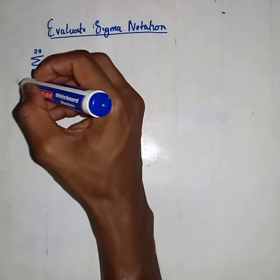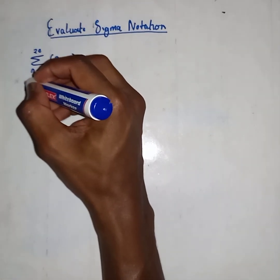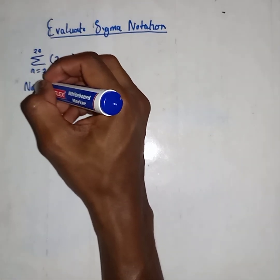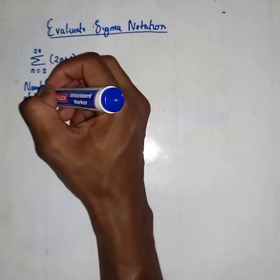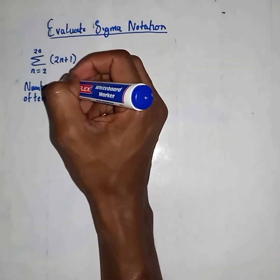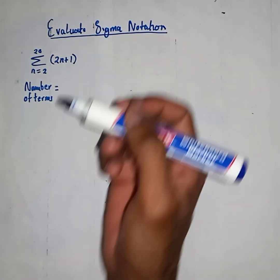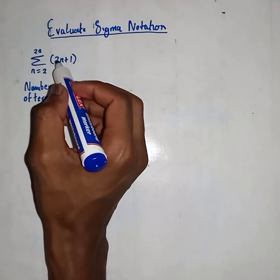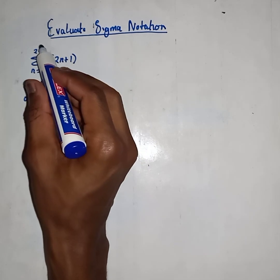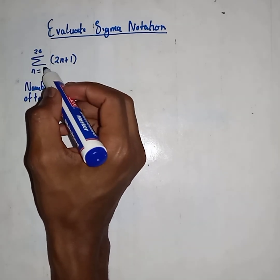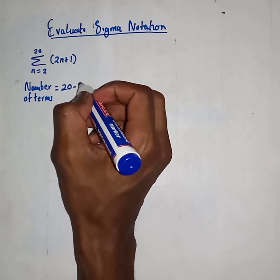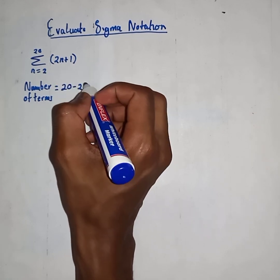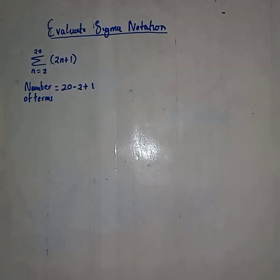So simple. Firstly, we need to figure out the number of terms. We have a general formula: last term minus first term. We are going to say 20 minus 2, plus 1.